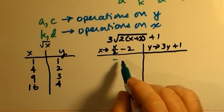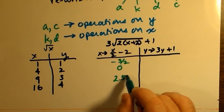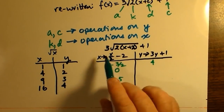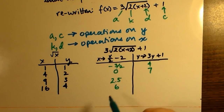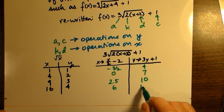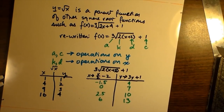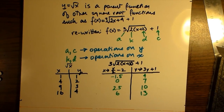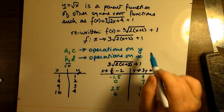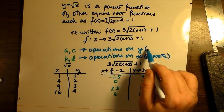Applying the x mapping: x = 1 gives 1/2 − 2 = −3/2; x = 4 gives 4/2 − 2 = 0, and so on — all x values are generated by x/2 − 2. For y: y = 1 gives 3(1) + 1 = 4; y = 2 gives 3(2) + 1 = 7; and similarly 10 and 13 are produced. Remember: operations on x are opposite, operations on y are direct.